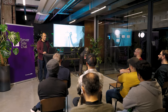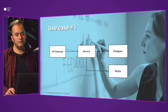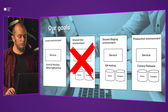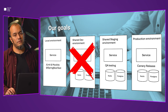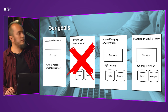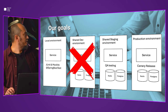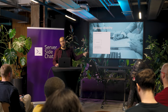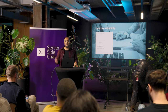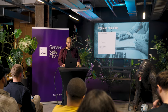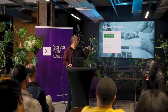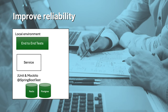So let's start. Just remember this is our use case for the demo. Our goal here is to remove the dev environment. We could also remove the staging environment, but for now let's focus on this one. To improve reliability and go to production with more confidence, we want to bring end-to-end tests and the databases from the dev environment to the local environment.